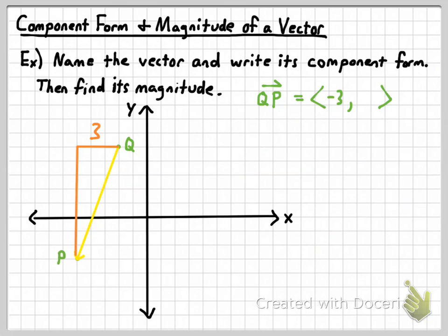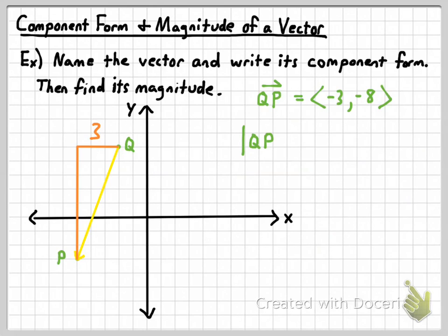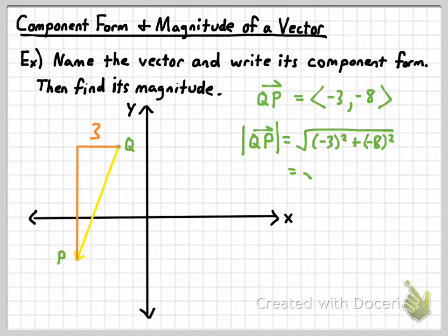Then the vertical component: we're going to have to go down — one, two, three, four, five, six, seven, eight units. Since the vertical component is going down, it's negative, so negative eight is the vertical component. Now for the magnitude of vector QP — remember the notation, you can put it in absolute value signs, but it means the magnitude of the vector. To find the magnitude, take the square root of the horizontal component squared plus the vertical component squared: the square root of negative three squared plus negative eight squared gives nine plus sixty-four, so the square root of seventy-three. You can't simplify that any further — that's the magnitude of that vector.